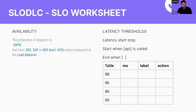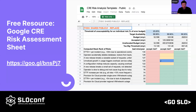We created a SLO worksheet that gives a picture of availability and latency. I've been using this worksheet for the last couple of years as part of SLO boot camps. It gives a simple one-view look at availability and latency for a particular service. On the latency side, we define the start and stop for the SLO, the different percentile latency goals, friendly labels, and what action to take when the SLO is violated. I also want to give a shout out to the Google CRE risk assessment sheet, which is really useful for defining achievable SLOs, building a reliability roadmap, and understanding what's aspirational. It works great with the SLO DLC.